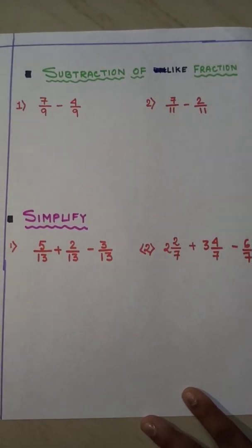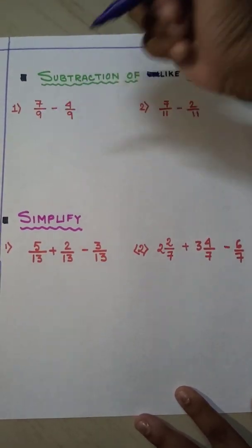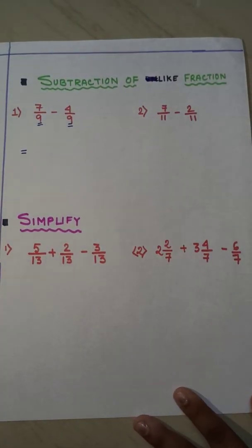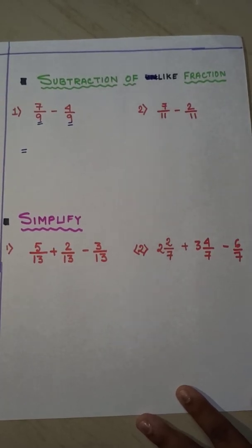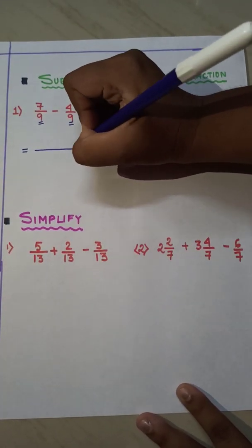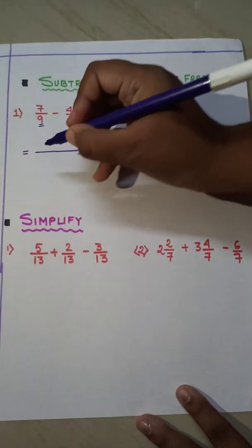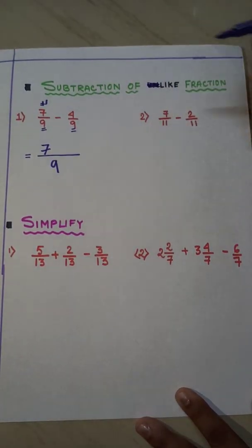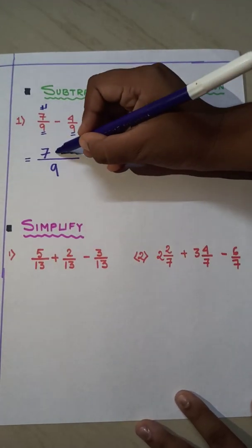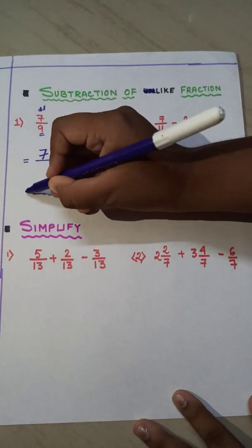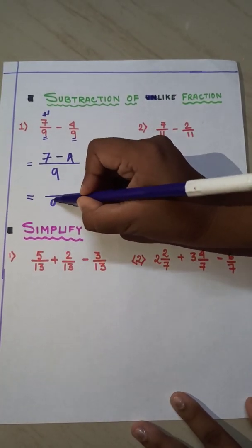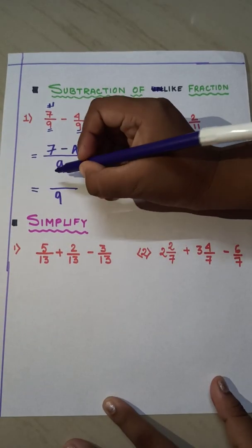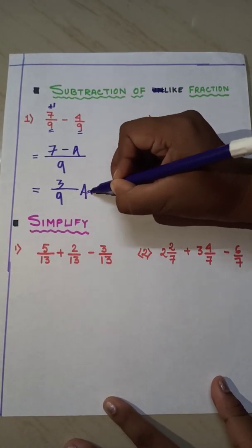Here, 7 by 9 minus 4 by 9. You can see these are two like fractions because all the denominators are the same. The formula is just the same as addition — here we just have to do subtraction. We draw a big line, write 9 at the denominator, and 7 minus 4 in the numerator. 7 minus 4 is 3. So our answer is 3 by 9.